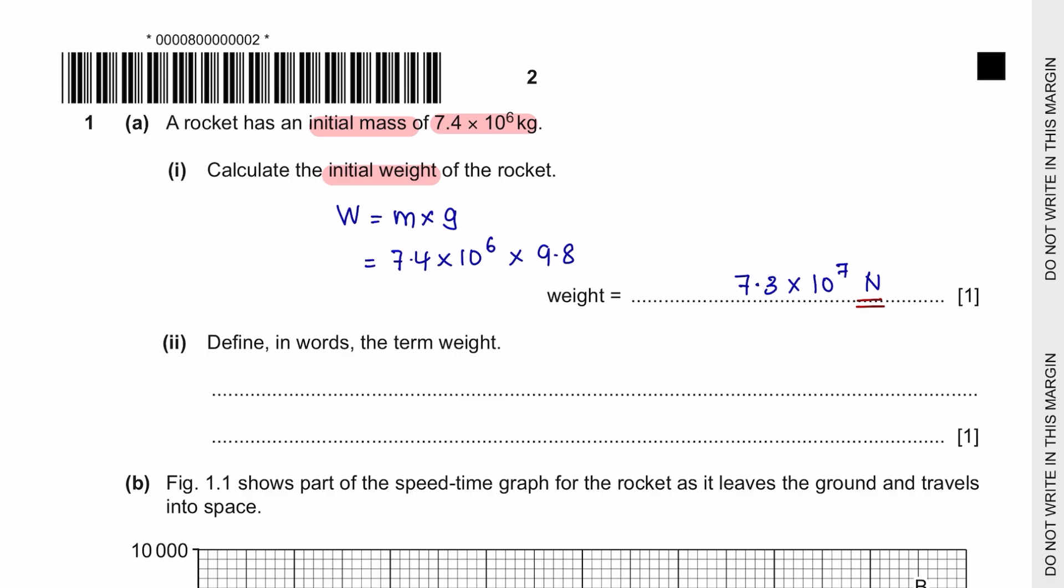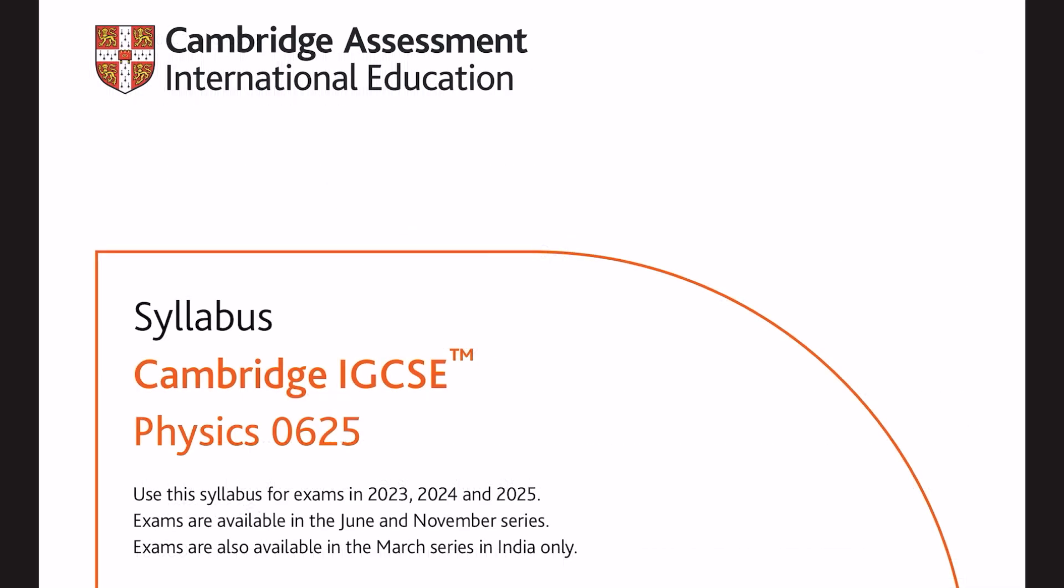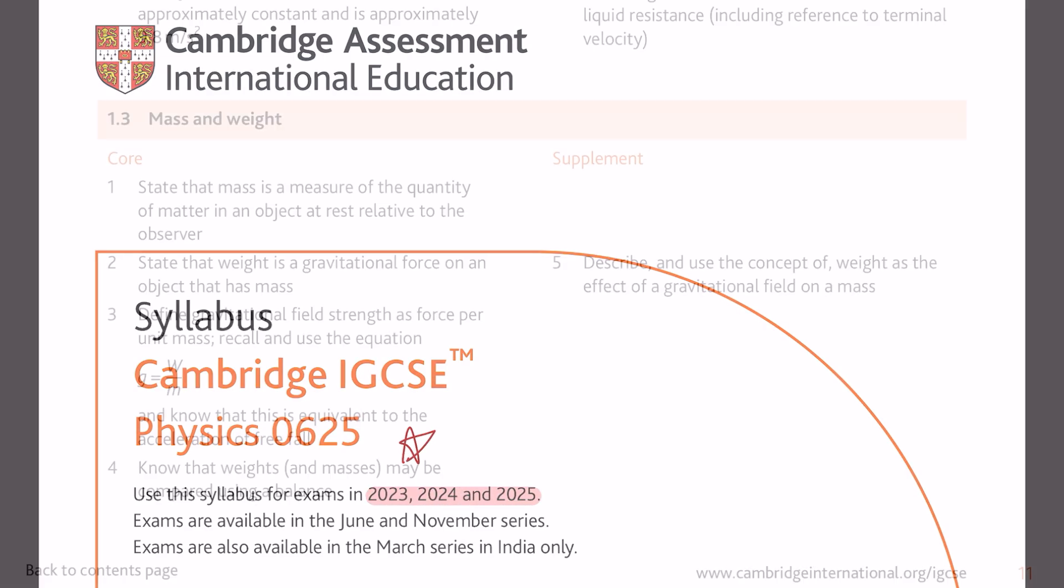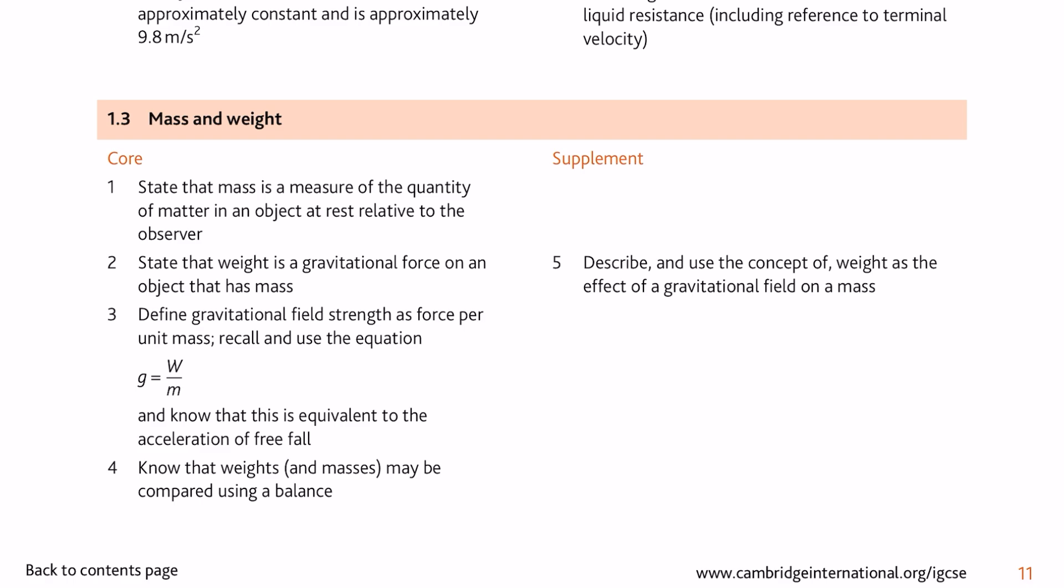Part 2: Define in words the term weight. Any definition necessary can be found in your syllabus. Just make sure that you're looking at the right one. Under topic 1.3, it has been stated to you that weight is a gravitational force on an object that has mass.